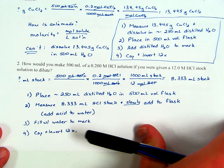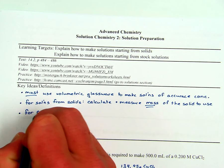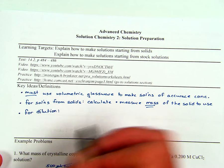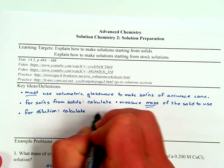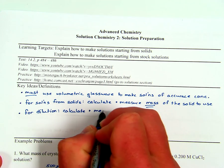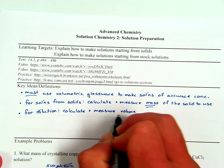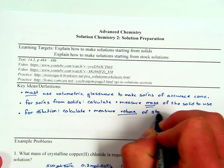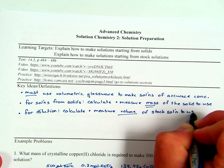The key idea for dilutions: when diluting a solution we already have, we calculate and measure the volume — not mass — of stock solution to use. That allows us to make the solution we need.